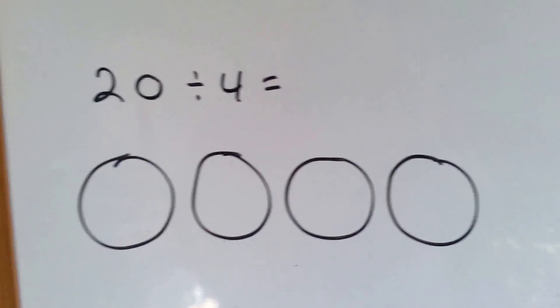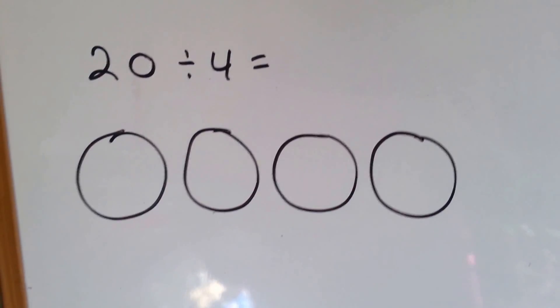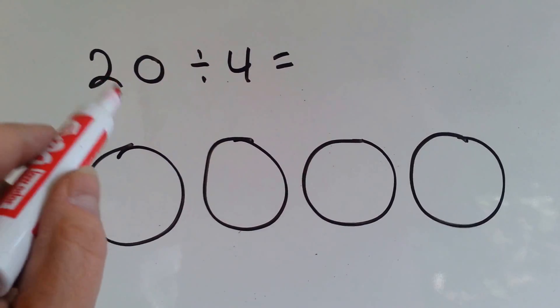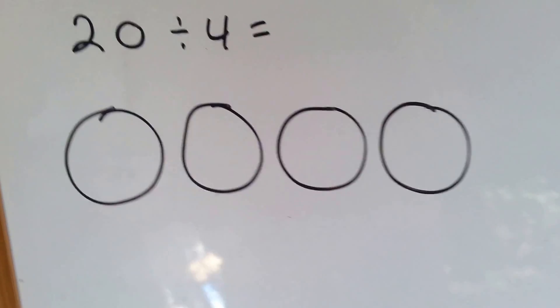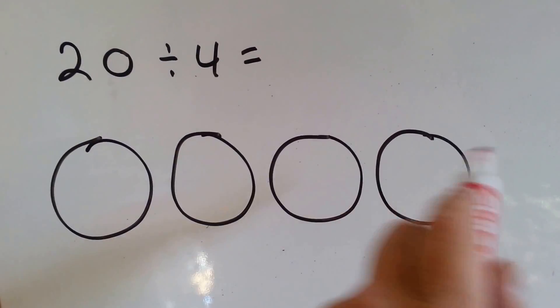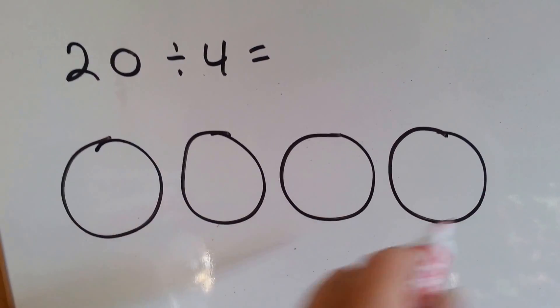Now, another way we could have done it is by making the groups. We have 20 and we need to divide it into 4 groups. So here's what we can do. We make our 4 groups and we start putting dots inside.